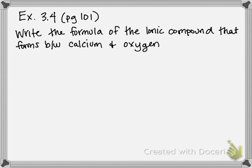This is example 3.4 on page 101 of our textbook. This is another example of writing a formula for an ionic compound. So here they want us to write the formula for the ionic compound that forms between calcium and oxygen.